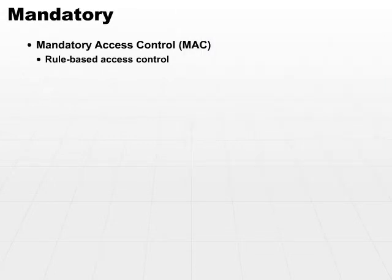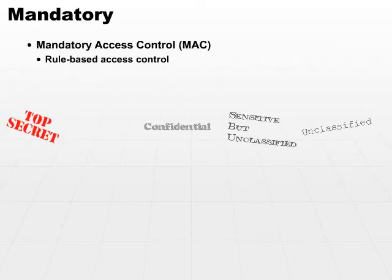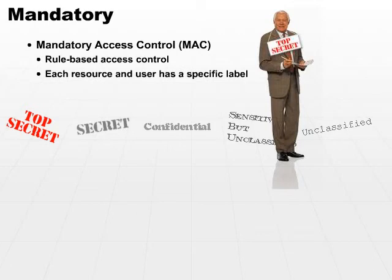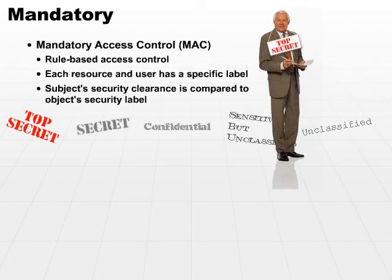The access is granted based on rules. This is where the security labels come into play. The labels we talked about earlier are used extensively in higher secured environments, or environments that require more security than just basic user and group IDs. Every resource has a specified label and every user has a specified clearance, and those are matched up. The subject's security clearance is compared to the object's security label. This is very often implemented in tables, in tabular form.